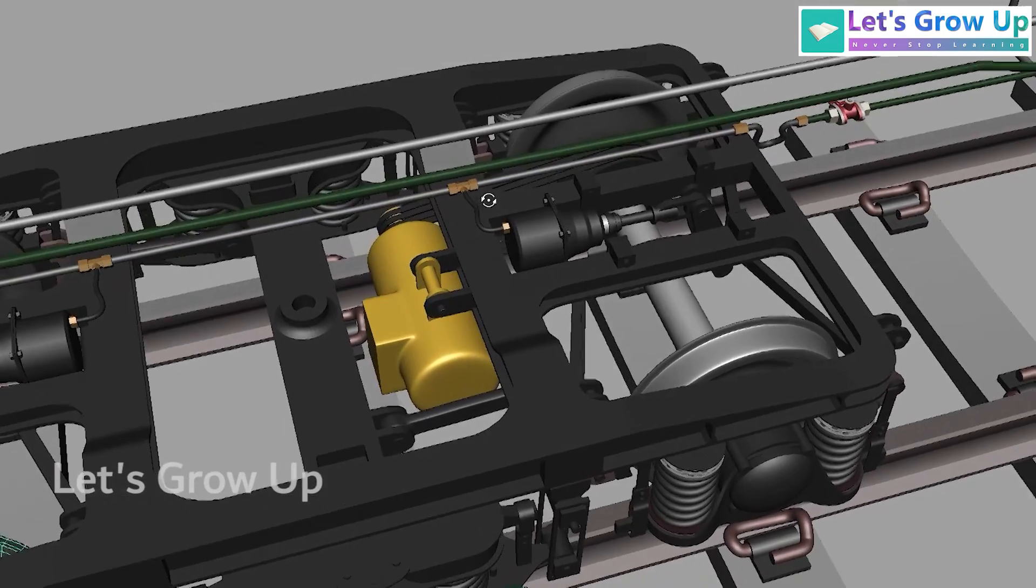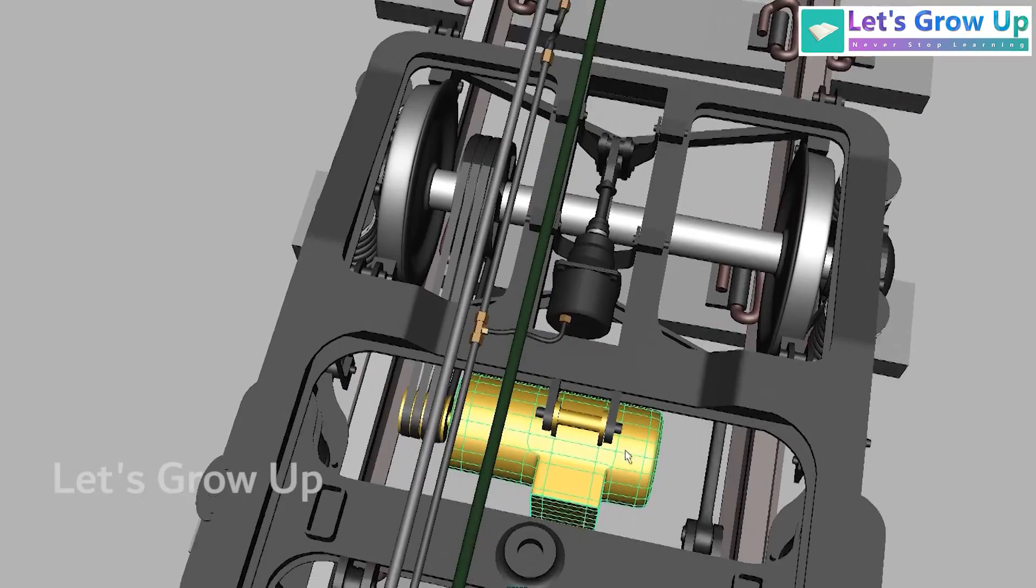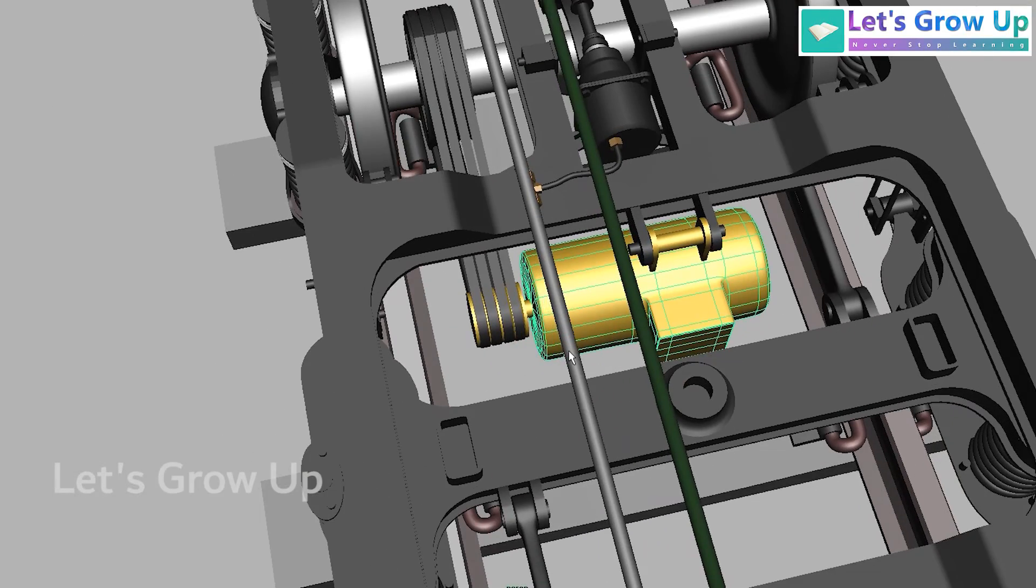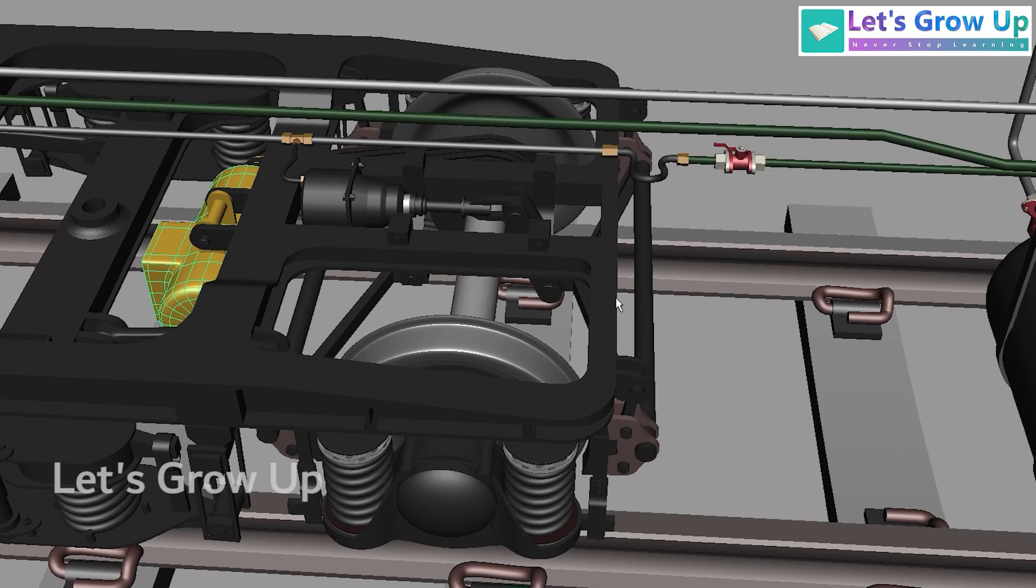And in this bogey, you can see the alternator. This is used to generate the power, and the power is transmitted to the battery box. And this electricity can fulfill the coaches' internal requirements.